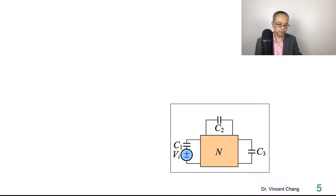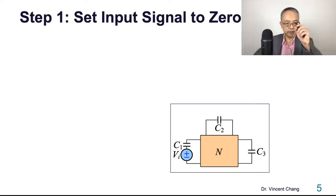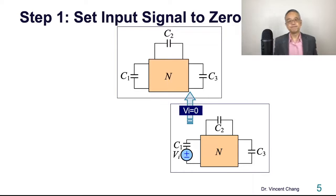Step number one, don't look at the VI. Set VI to zero. Set the input signal to zero. It's just short. If it's the voltage source, just short circuit the voltage source. If it's current signal, just open circuit the current signal. Then you will see this. So now this is step number one.